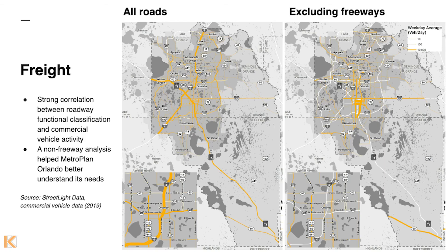Metroplan really wanted to dive a little bit deeper and ignore those limited-access facilities for a moment, focusing on the bigger arterial roads that they can actually do more about. By excluding freeways, we come up with the map on the right that shows a lot of the freight activity happening in this core industrial area in South Orlando.